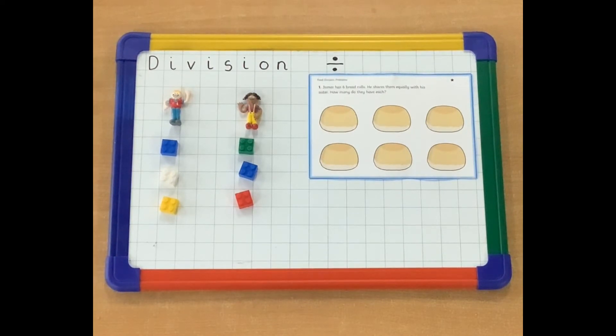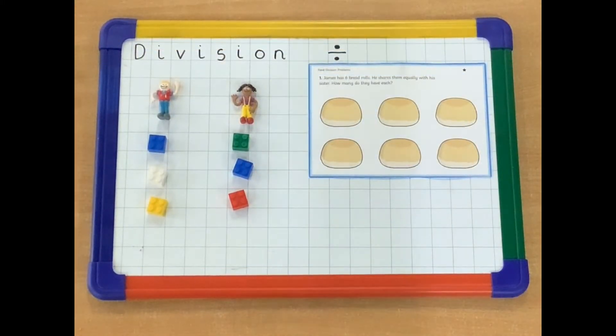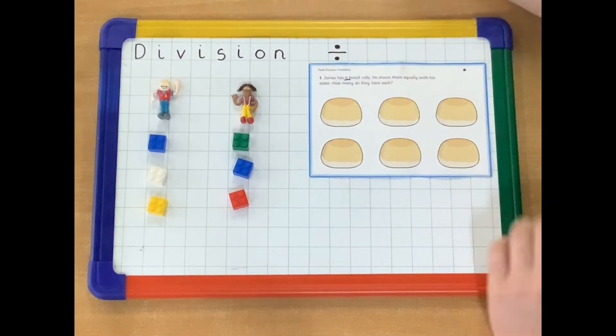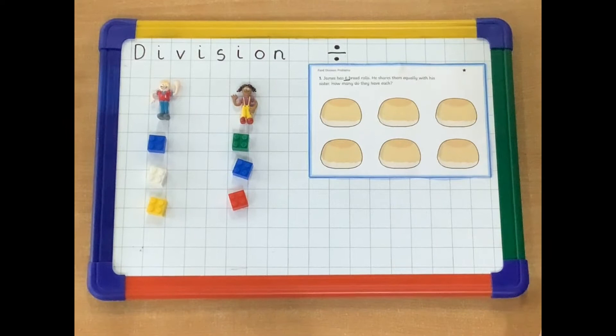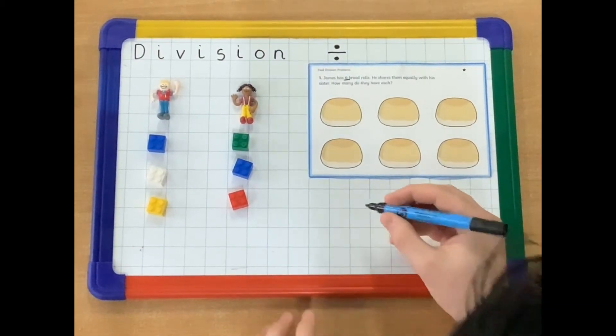So we know that six rolls divided, shared between two people, gives the answer of three. But how would we write that as a number sentence? And how do we know what to write? First of all, we need to write how many bread rolls we have. So we can see here that we have six bread rolls. So that is going to be the number that we start with, because that is the number that we want to share.